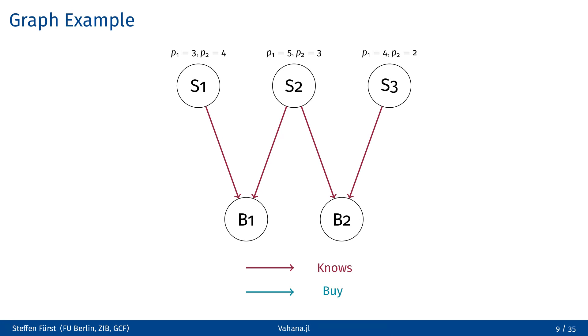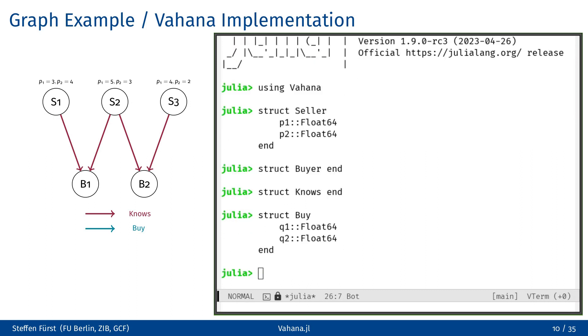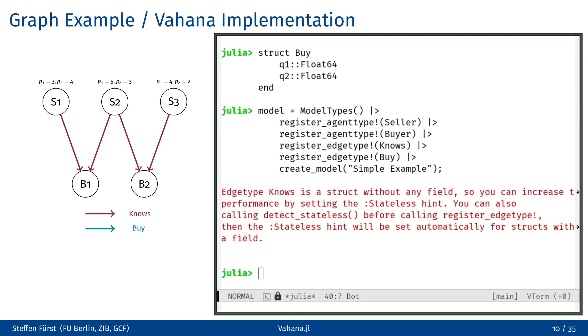When we want to implement this in Vahana, we first must define all types used. For the sellers, we create a struct with two fields for the different prices. The buyers are in our extremely simple model without any state, and also the knows edges do not need any state. The buy edges have the quantity of the bought goods as fields. The first step we take in Vahana is to inform it about all the agent and edge types we are using in our model. We accomplish this by using the model types constructor to generate a starting point. Then we add to our model types instance each type of agent and edge. Finally we create our model and give it a name, like simple example in this case. As you can see, Vahana displays a warning. We ignore this for now, but at the end of the presentation you can hopefully understand the message.